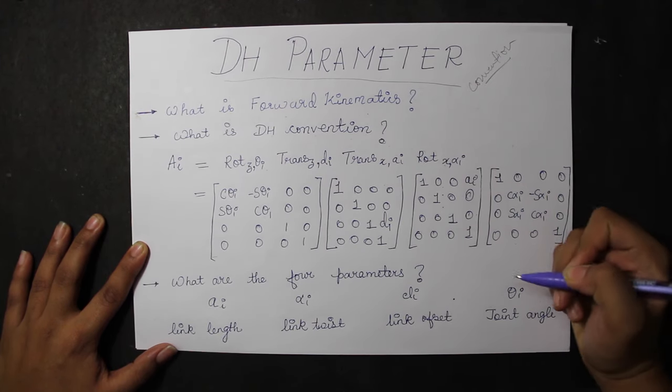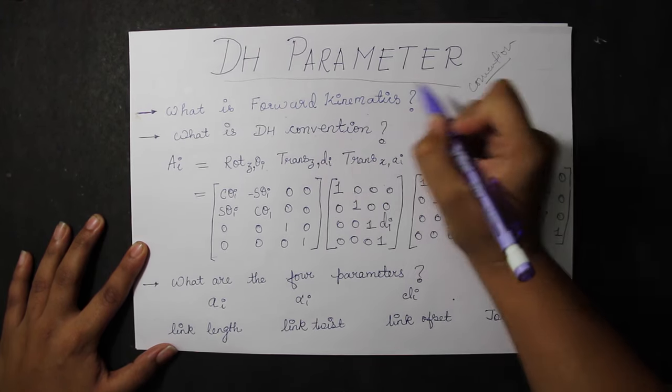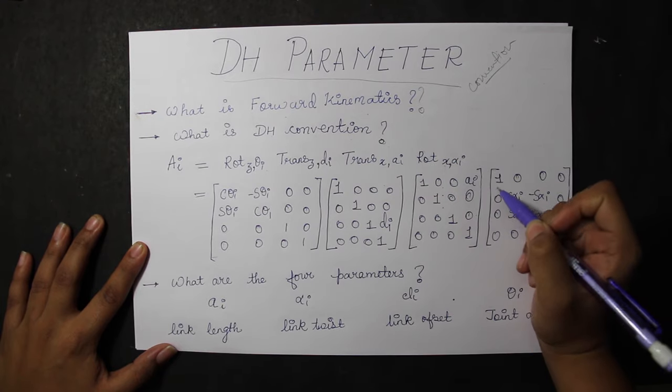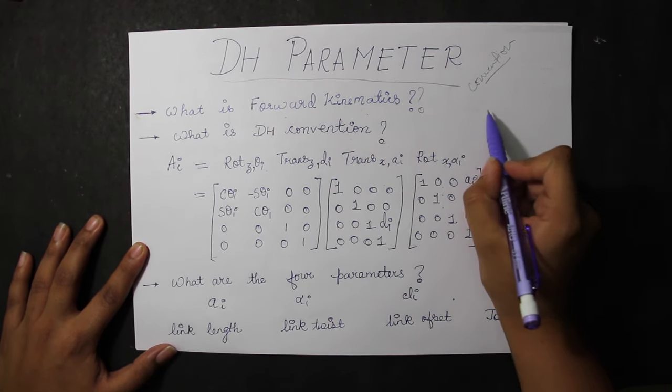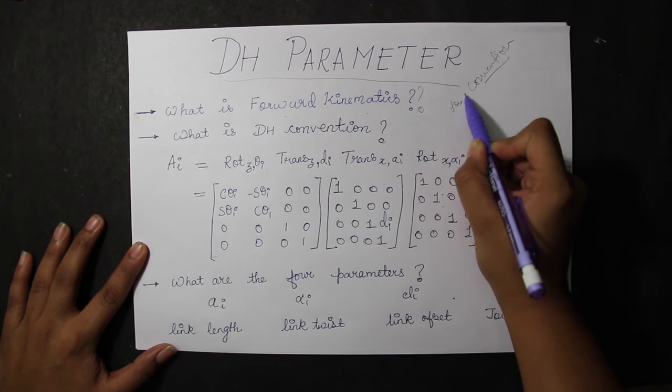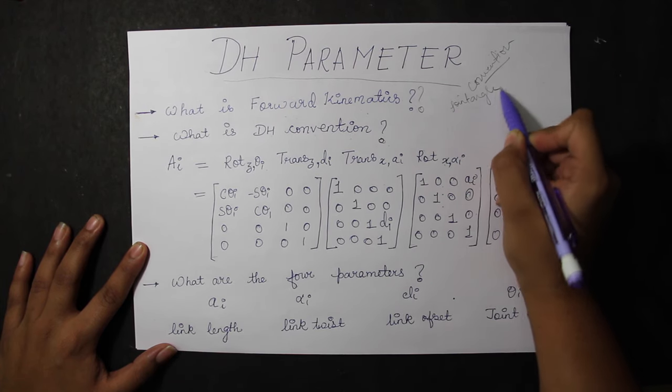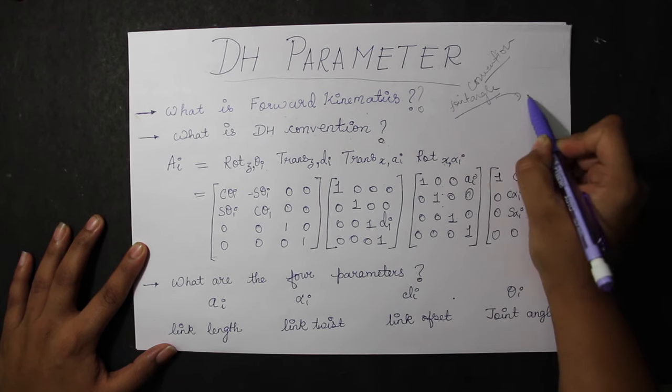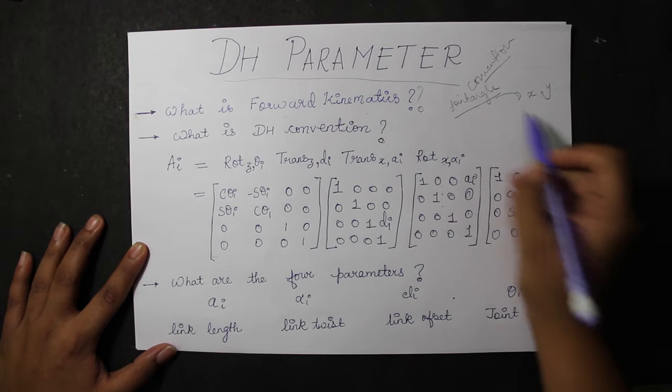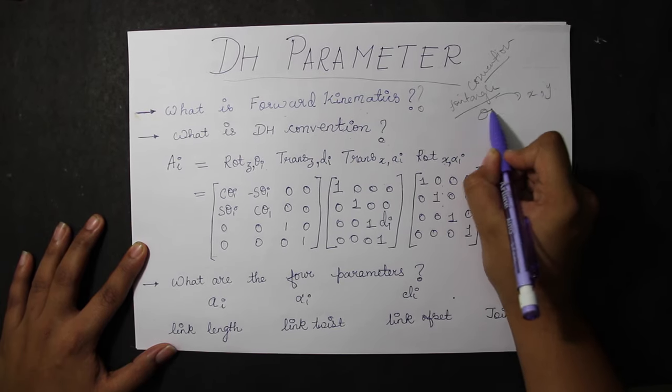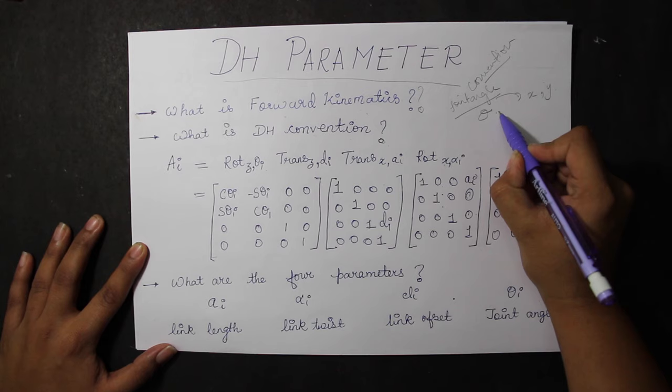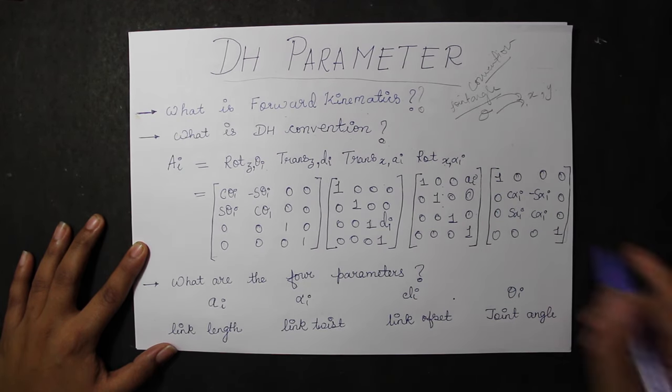Before starting it, let us look at what forward kinematics is. As I have told earlier, forward kinematics links or gives a relationship between the individual joints of the robot manipulator and the position. Forward kinematics links the theta of the manipulator with the position it needs to reach.